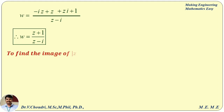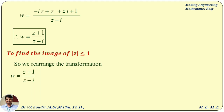Now we are going to complete the second target: find the image of modulus z less than or equal to 1. We need to find z in terms of w, so we are rearranging the transformation.